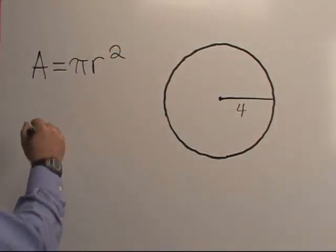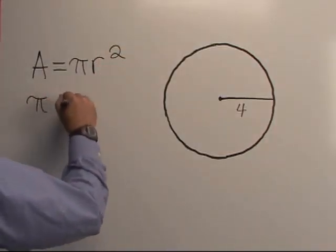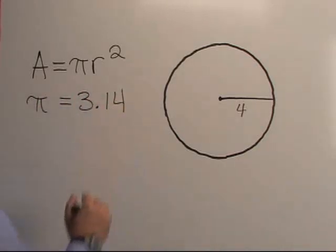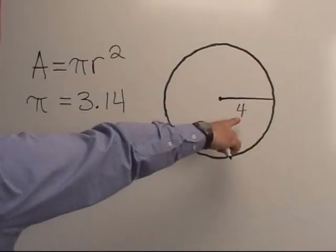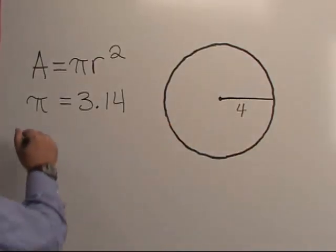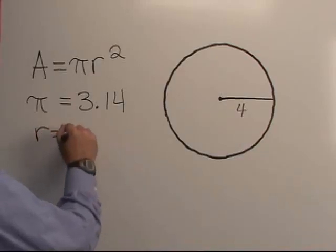We know that pi is a constant which is equal to 3.14. We are given the radius of this circle, which is 4. So we know r equals 4.